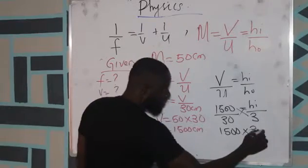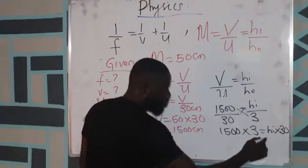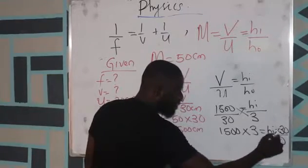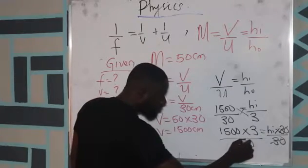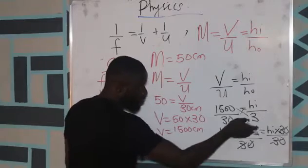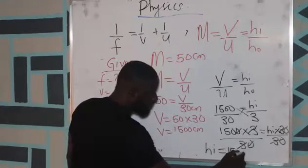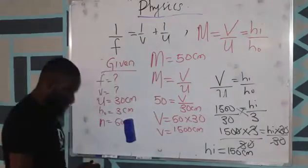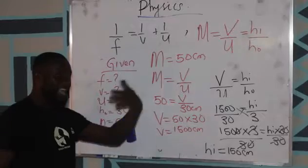3 is equal to height of image times 30, so we're dividing all through by 30. The height of the image - 3 will go into this and 0 will cancel. The image height now is 150 centimeters. Now we've gotten the image distance, we now know the height of the image.